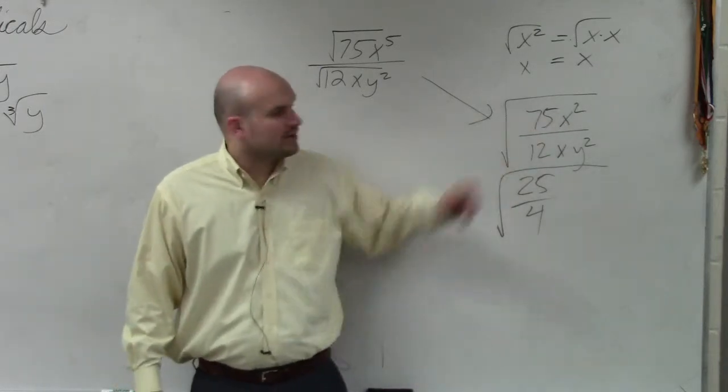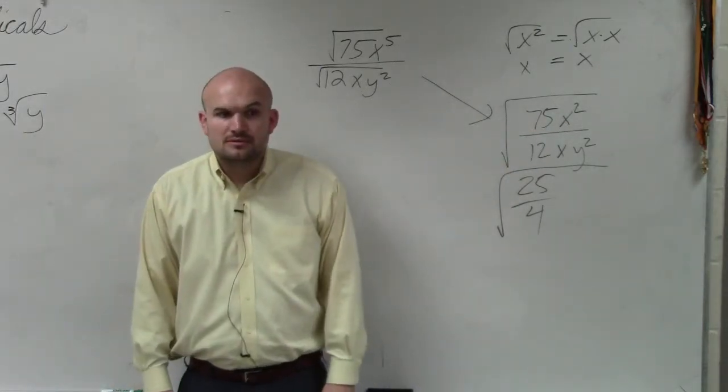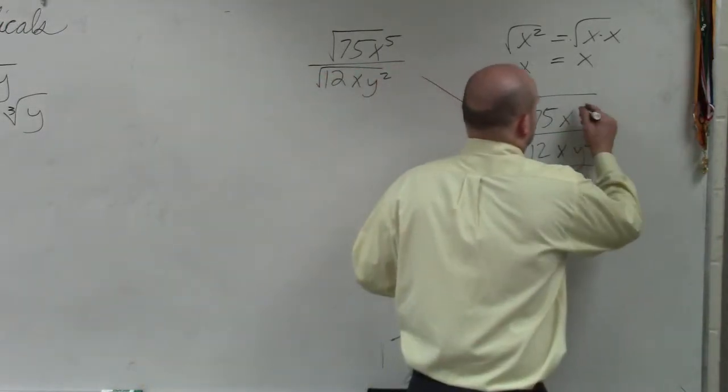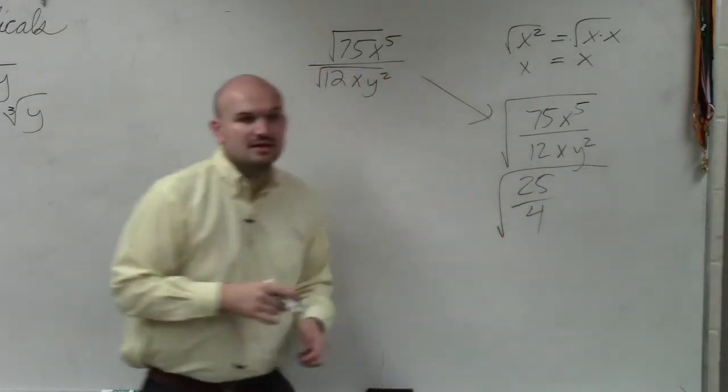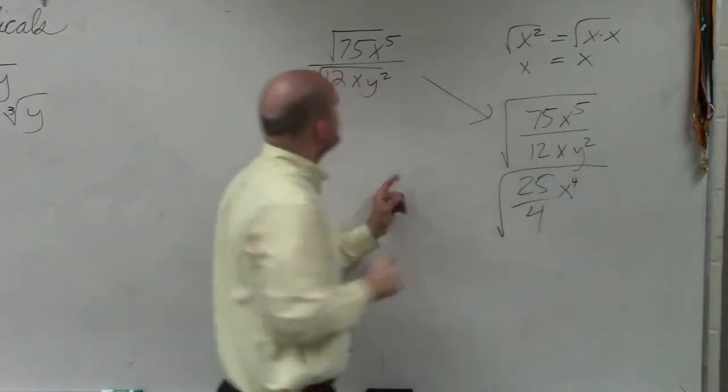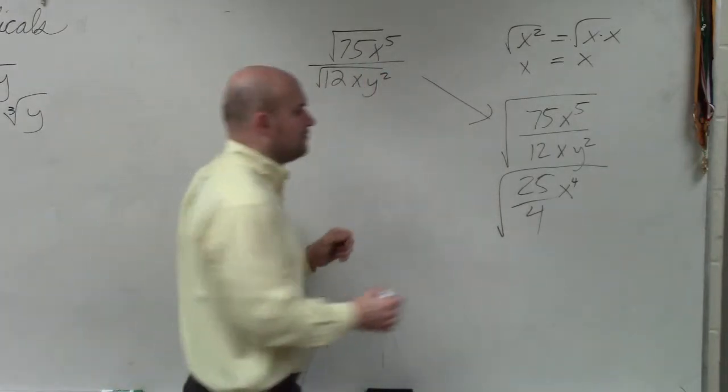Then what is x squared minus x? Wait, where did you get x squared from? It's x fifth. Oh, x to the fifth. So x to the fifth over x is x to the fourth. And y squared is just going to remain y squared under there.